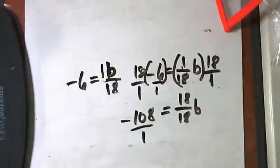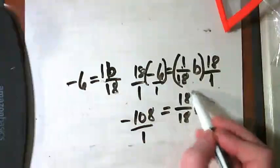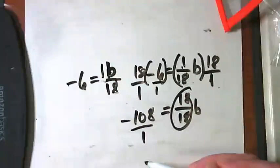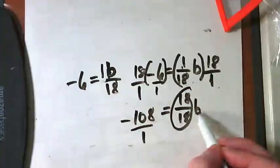We leave a lot of these steps off when we're doing this work. Because typically, I wouldn't write this either. I know that 18 over 18 is 1. And what am I really trying to do here?